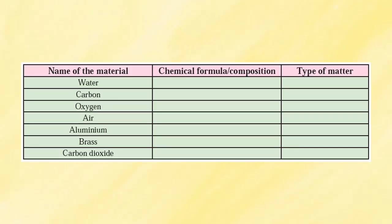On the same page 40, we have another table where we write the chemical formula and the type of matter. Water: chemical formula H₂O, type of matter — compound. Carbon: C, type of matter — element. A compound means different types of atoms come together to form one particular material; for water, hydrogen and oxygen come together. An element is made from only one type of atom, so carbon (C) is an element. Oxygen is O₂ — again an element. Air is made up of hydrogen, oxygen, nitrogen and carbon dioxide, so it is a mixture. Students, you have to complete the remaining entries for aluminum, brass and carbon dioxide.